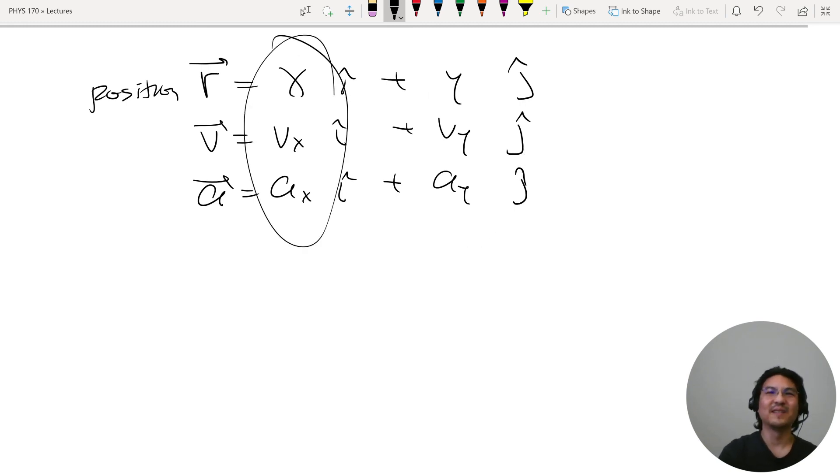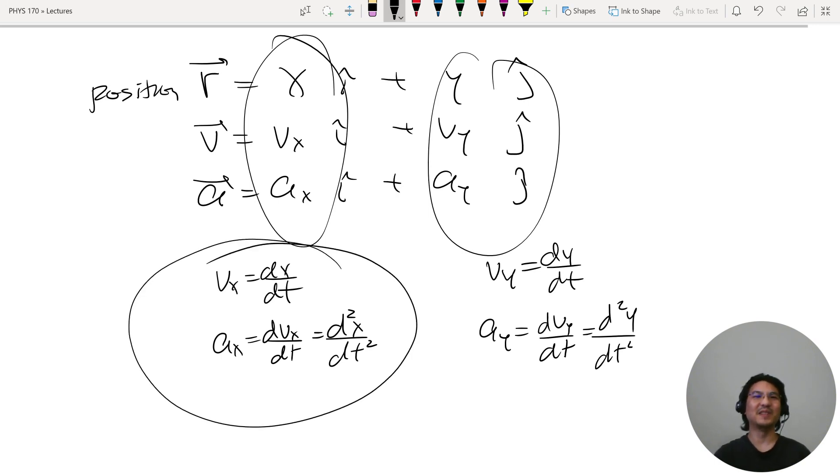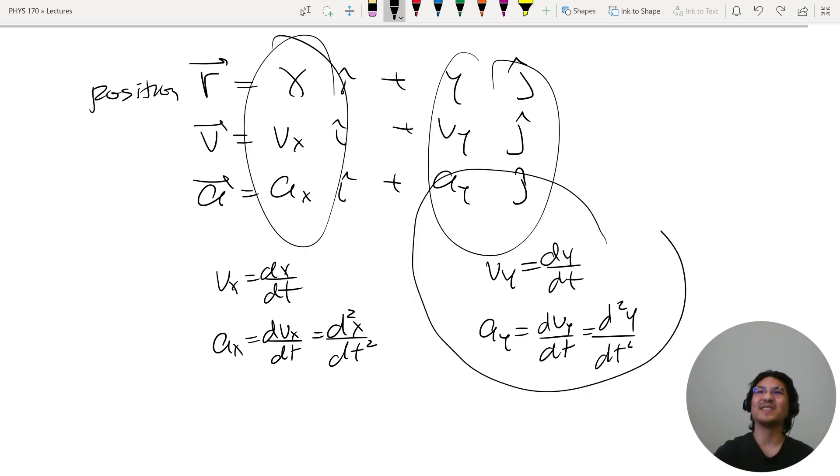And then what happens here, you know that this is the time derivative of that. Acceleration is the time derivative of velocity, and then what happens here, y, and then a_y. And then if acceleration is constant, you have your one-dimensional kinematics for constant acceleration. If a_y is constant, then you can use kinematics for constant acceleration in y.